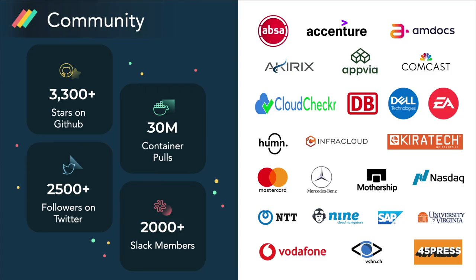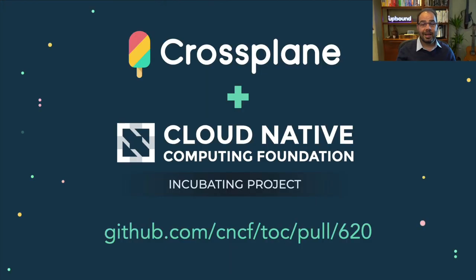The conformance program comes at a time when Crossplane is growing faster than we've ever seen. Organizations of all different sizes are adopting it in production. They are augmenting their existing Kubernetes deployments, while some companies are using it as the centerpiece of their cloud-native transformation, moving off of IaC tooling entirely. All this momentum in the community has led us to apply for promoting Crossplane to incubation status at the CNCF. The TOC will vote on this shortly, but we are extremely excited by the progress.